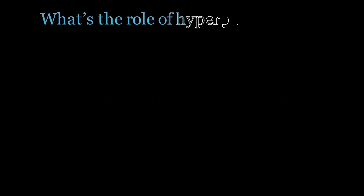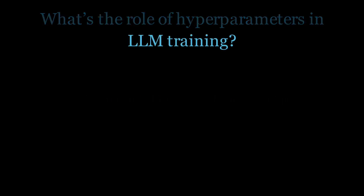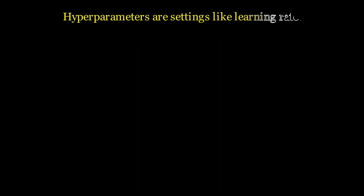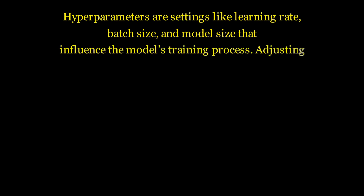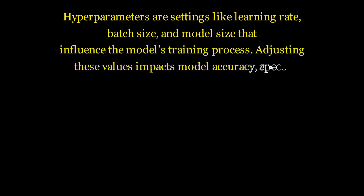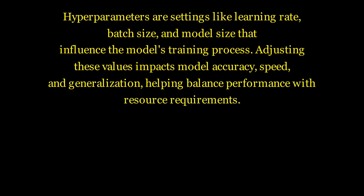What's the role of hyperparameters in LLM training? Hyperparameters are settings like learning rate, batch size, and model size that influence the model's training process. Adjusting these values impacts model accuracy, speed, and generalization, helping balance performance with resource requirements.